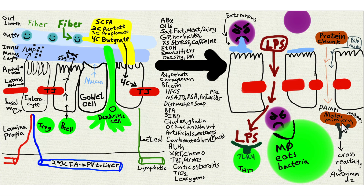Autoimmune diseases driven by this mechanism include Hashimoto's thyroiditis, Graves' thyrotoxicosis, lupus, and many others. With dairy, it's thought to be the mechanism for multiple sclerosis. An individual autoimmune disease can have more than one mechanism, but leaky gut is the most important thing you can know about autoimmune disease.